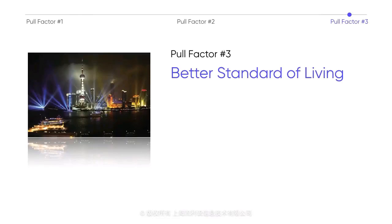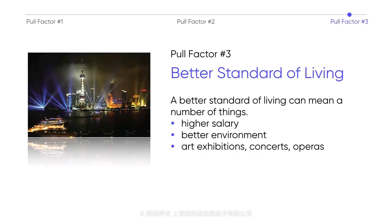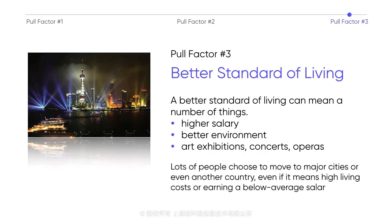Speaking of standard of living, people may also migrate to enjoy a better one. A better standard of living can mean a number of things: higher salary, better environment, or even access to more art exhibitions, concerts, or operas. As a result, lots of people choose to move to major cities or another country, even if it means high living costs or earning a below-average salary. Many college graduates face this situation, especially those who studied in second-tier cities. They can easily find decent jobs there, yet some decide to build a new life in cities like Beijing, Shanghai, or Guangzhou, simply because they can't resist the charm of big cities.